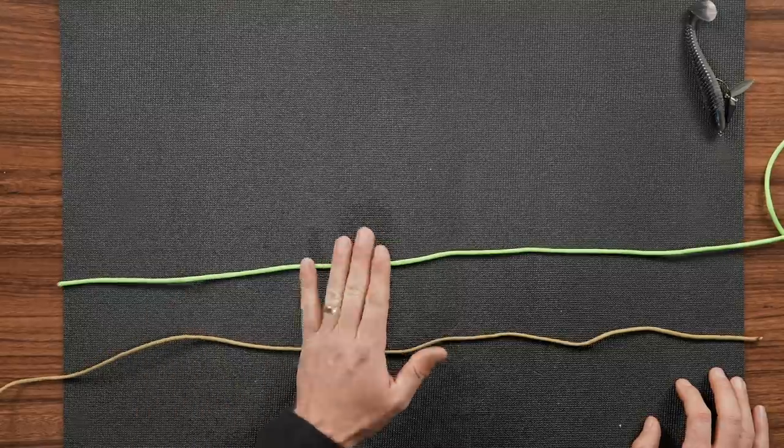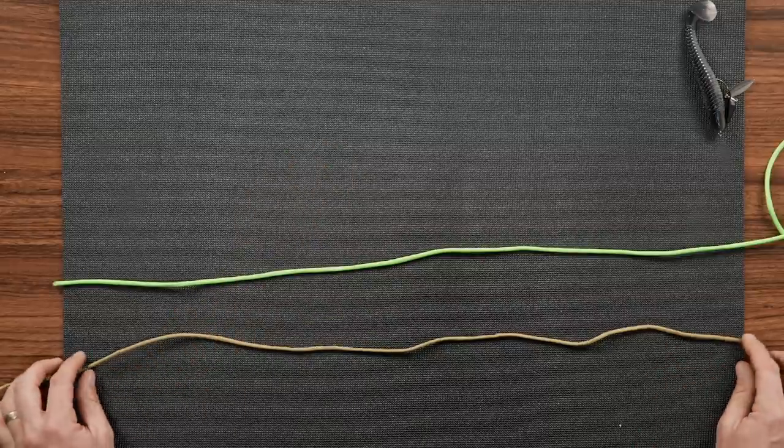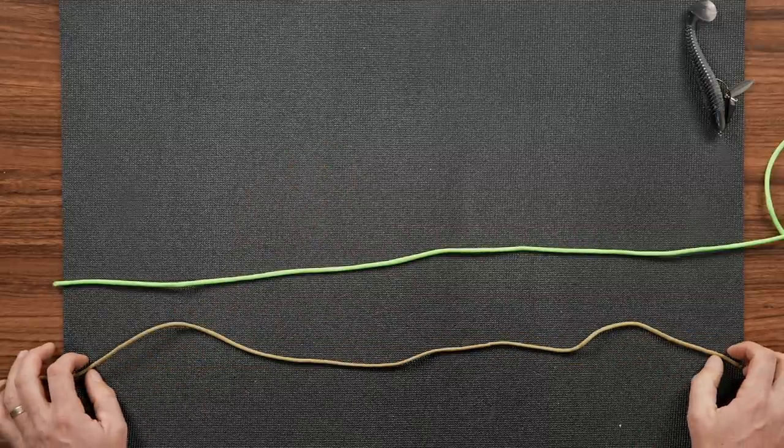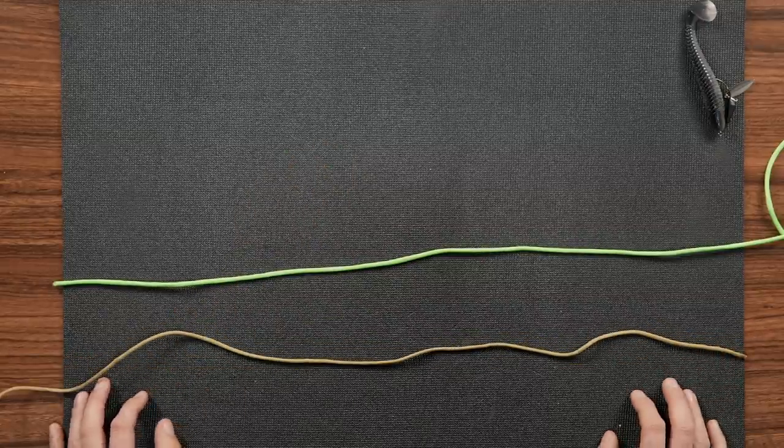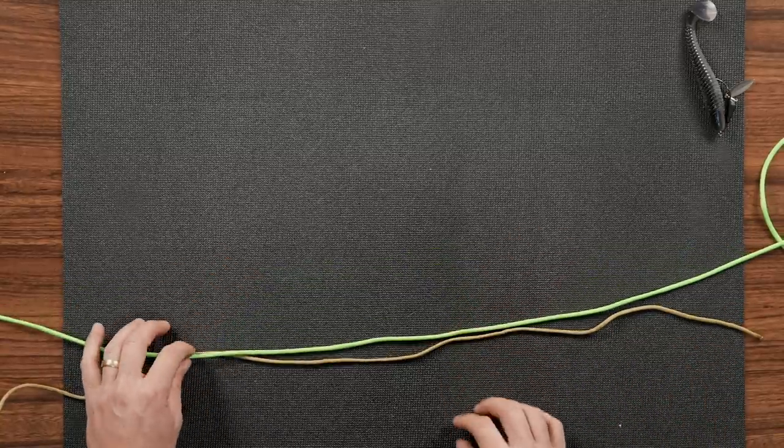So we've got our two lines here. Now the green line, for visual purposes, this is going to be our braid. And then our brown is going to be our fluoro. And we're going to cross the lines like this. Bring them together.